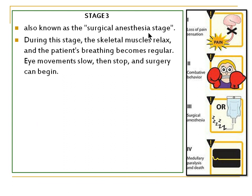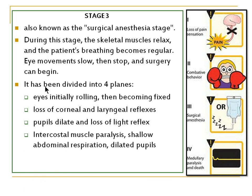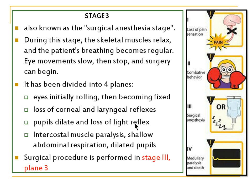Stage 3 is known as the surgical anaesthesia stage. During this stage, the skeletal muscles relax, the patient's breathing becomes regular, eye movement slows and then stops, and surgery can begin. Stage 3 is divided into four planes. In Plane 1, the eyes are initially rolling then become fixed. In Plane 2, there is loss of corneal and laryngeal reflex. In Plane 3, the pupils are dilated and there is loss of light reflex. In Plane 4, the intercostal muscles are paralyzed, with shallow abdominal respiration and dilated pupils. Plane 3 of Stage 3 is the preferred level for surgical procedures.